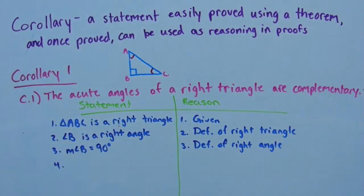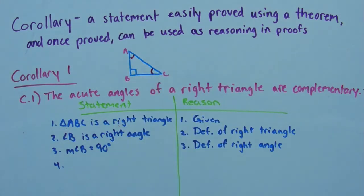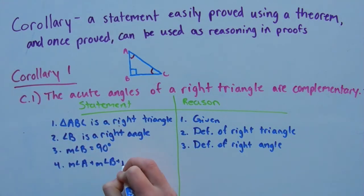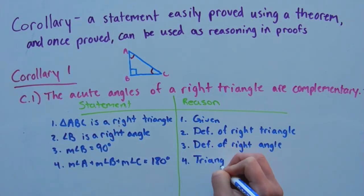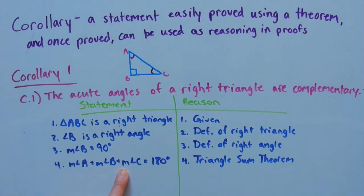And remember, the triangle sum theorem says that all the angles add up to be 180 degrees. So the measure of angle A plus the measure of angle B plus the measure of angle C equals 180 degrees.